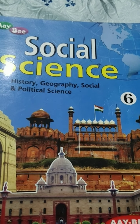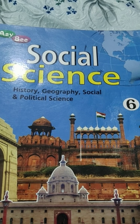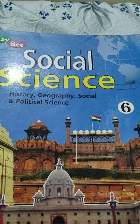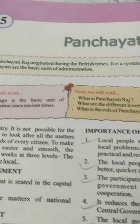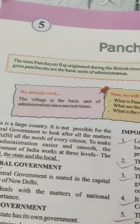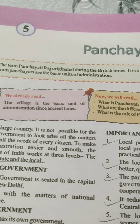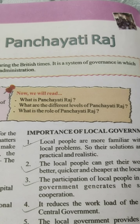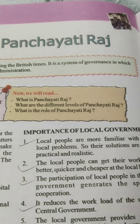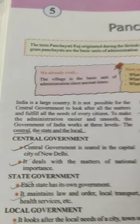Dear students, welcome to the Standard 6 Social Science class. Dear children, today I am going to teach you Part 3 Civics, Chapter 5. All of you open page number 240 — Panchayati Raj. Children, we already read that the village is the basic unit of administration since ancient times. In this chapter, we will learn what is Panchayati Raj, what are the different levels of Panchayati Raj, and what is the role of Panchayati Raj. So, let's begin the chapter.